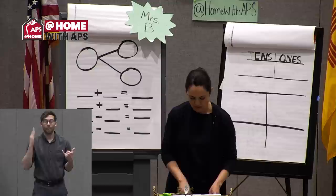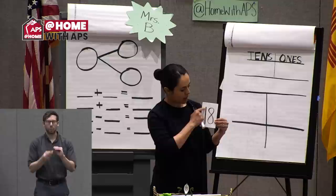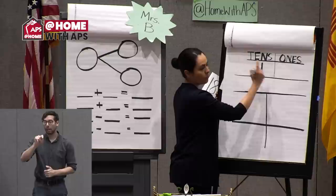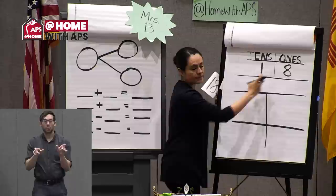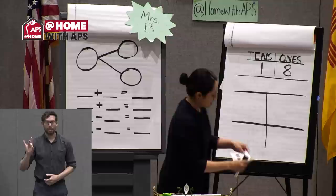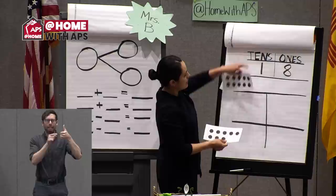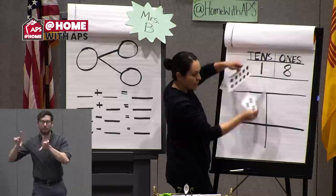Let's write the number of the day on the board. Notice the number 18 has two digits — a one in the tens place and an eight in the ones place. So here I wrote tens and ones. We have one group of ten and then eight ones to make 18. If we look at our ten frames, this means we have one ten frame filled up — ten here — and then eight ones to make 18.